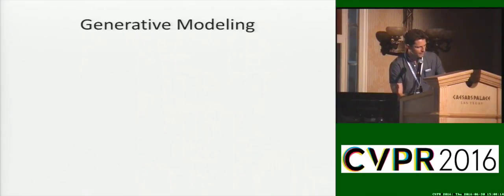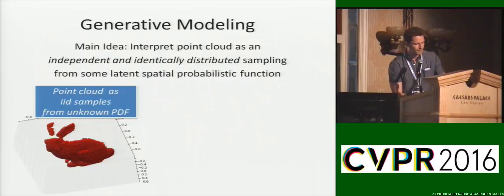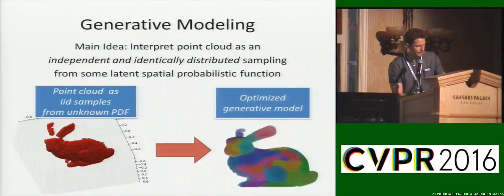Due to the large amount of data produced by modern 3D range sensors, most applications typically discretize the data in the form of voxel grids or octrees, but our work takes an approach of statistical parameterization through generative modeling. To do this, we reinterpret the points as an IID sampling from some unknown probability distribution and then optimize for those distribution parameters. If the PDF accurately reflects the statistics of the original point cloud data, we can then discard the raw points and work only with the PDF, which may need only a relatively small set of parameters to be useful.